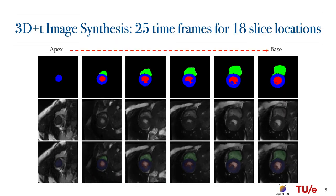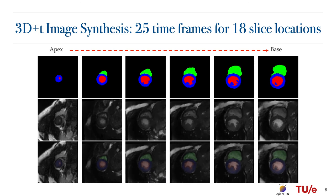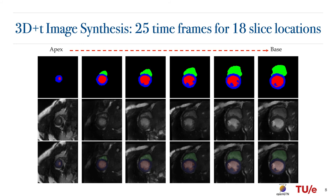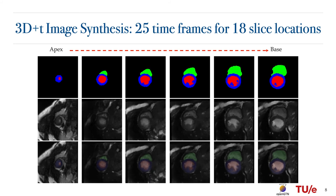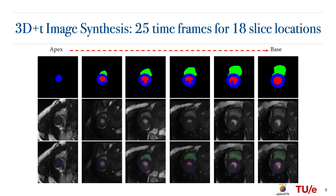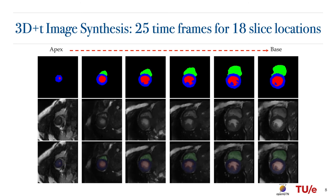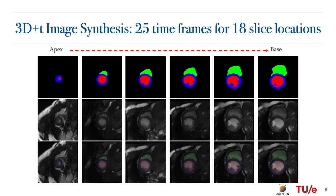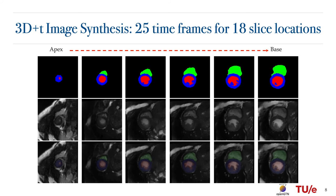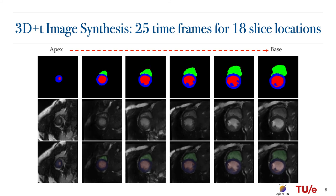Using the parameterized motion model of the XCAD heart, we generate labels for 25 time frames of the heart for one cardiac cycle at 18 different locations of the short axis view. Subsequently, realistic images are generated from these labels with modality-specific features, which are learned from real cardiac MR image data during training.